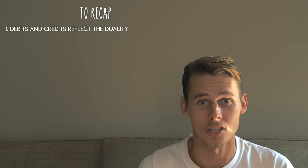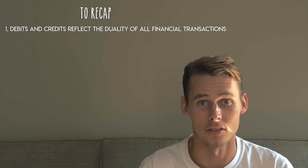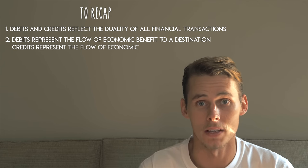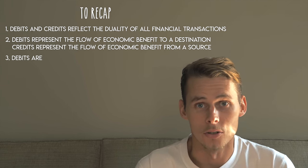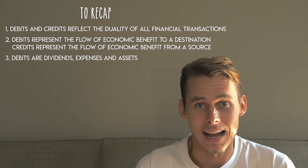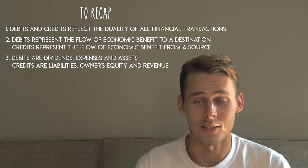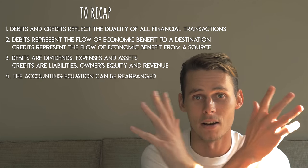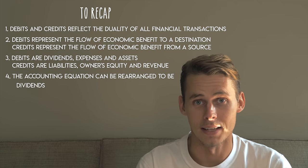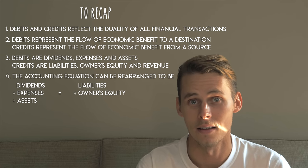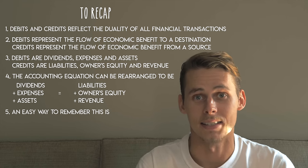Let's recap the main points. Debits and credits are words used to reflect the duality or double-sided nature of all financial transactions. Debits represent the flow of economic benefit to the destination; credits represent the flow of economic benefit from the source. Debits include dividends, expenses, and assets. Credits include liabilities, owner's equity paid in, and revenue. This is reflected through the accounting equation expanded and rearranged as: dividends plus expenses plus assets equal liabilities plus owner's equity paid in plus revenue. An easy way to remember this is: Dealer.